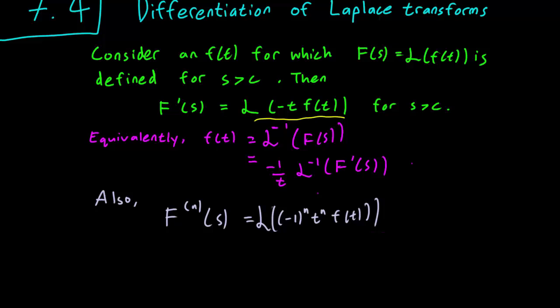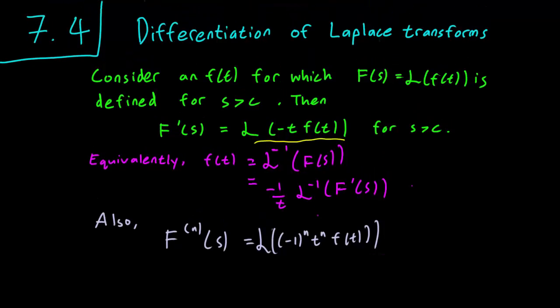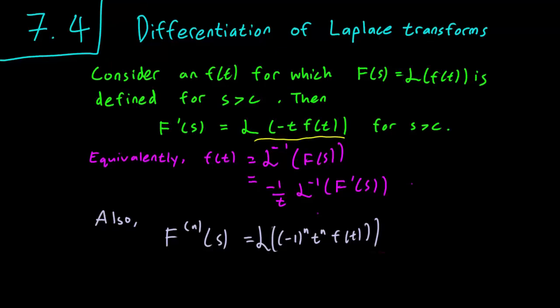And lastly, we can apply the formula several times to get a formula for the nth derivative of the Laplace transform. So we just have to multiply the function by minus t n times to have minus 1 to the n and t to the n times that function.